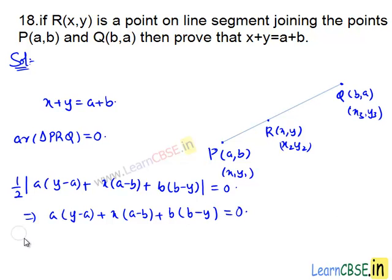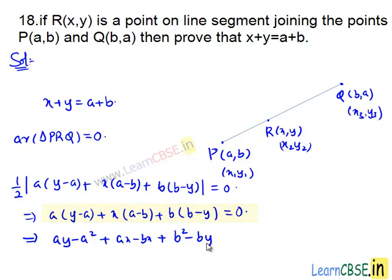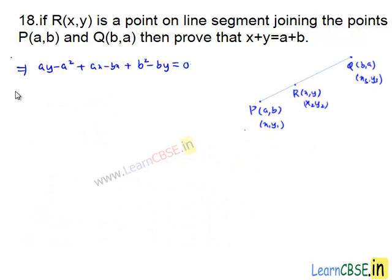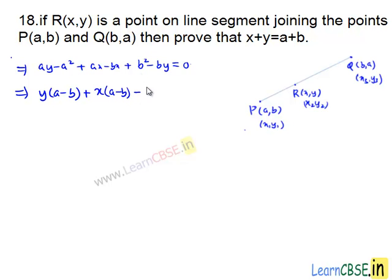Expanding the brackets, we get: AY minus A squared plus AX minus BX plus B squared minus BY equals zero. Taking Y common in AY minus BY, we get Y times (A minus B). Taking X common in AX minus BX, we get X times (A minus B). Taking minus 1 common in A squared minus B squared, we get minus of (A squared minus B squared) equals zero.